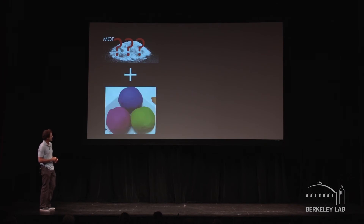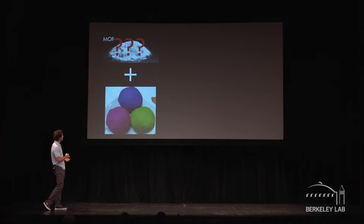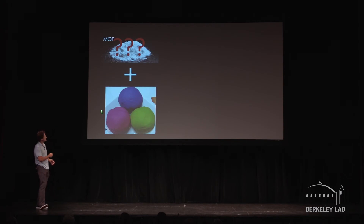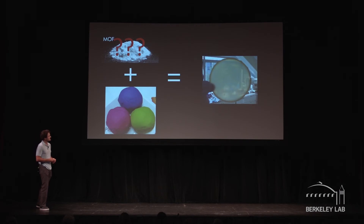So our magic in the lab is really making hybrid materials. For that we're taking plastics — you can think of Play-Doh, it's fine — and you mix these together. And if you do it and get the chemistry just right, you can make test membranes like this.